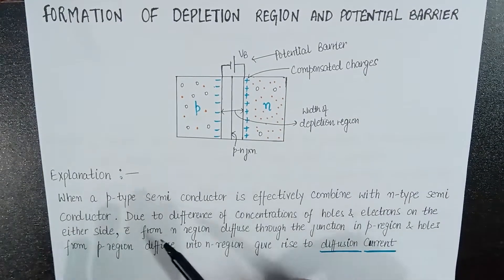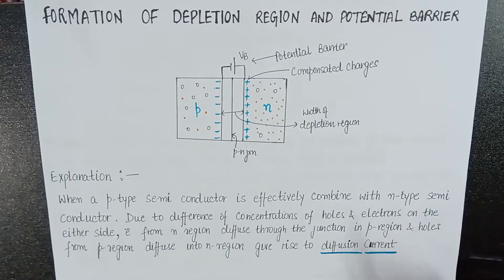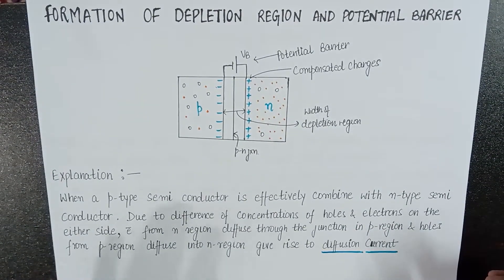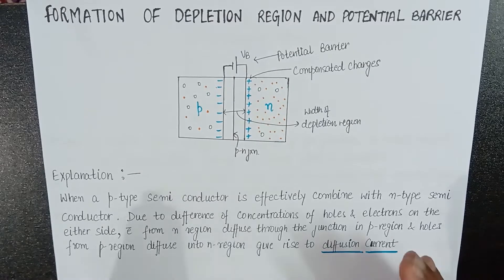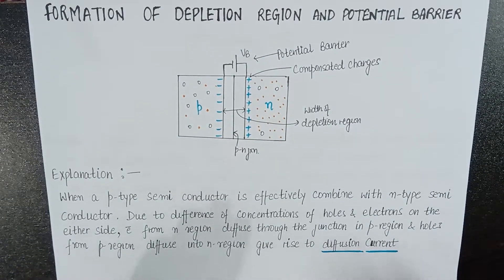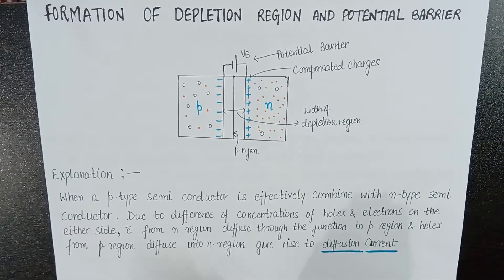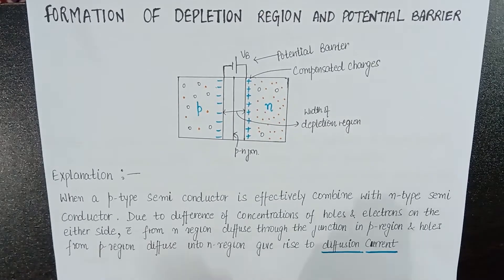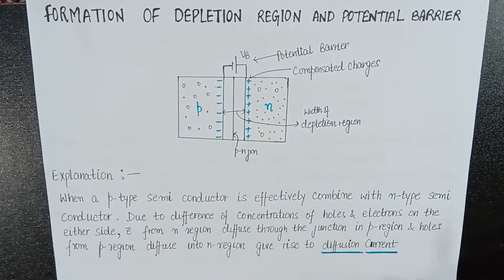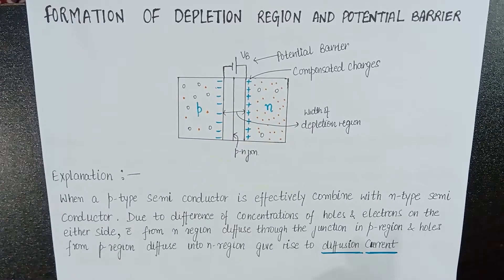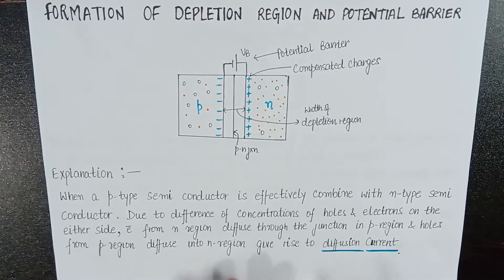When P-type semiconductor is combined with N-type semiconductor, there is a difference in concentration of holes and electrons on either side. On the N side, the majority carriers are electrons, and on the P side, the majority carriers are holes. Electrons from the N side move to the P side, from higher to lower concentration. Similarly, holes move from the P side to the N side. This diffusion of carriers causes a current to flow, which is known as diffusion current.